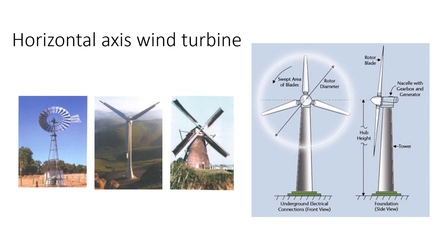The horizontal axis turbine is the most common wind turbine design. In addition to being parallel to the ground, the axis of blade rotation is parallel to the wind flow. Some machines operate in an upwind mode with the blades upwind of the tower, using a tail vane to keep blades facing into the wind. Other designs operate in a downwind mode so that wind passes the lower portion of the tower before striking the blades.